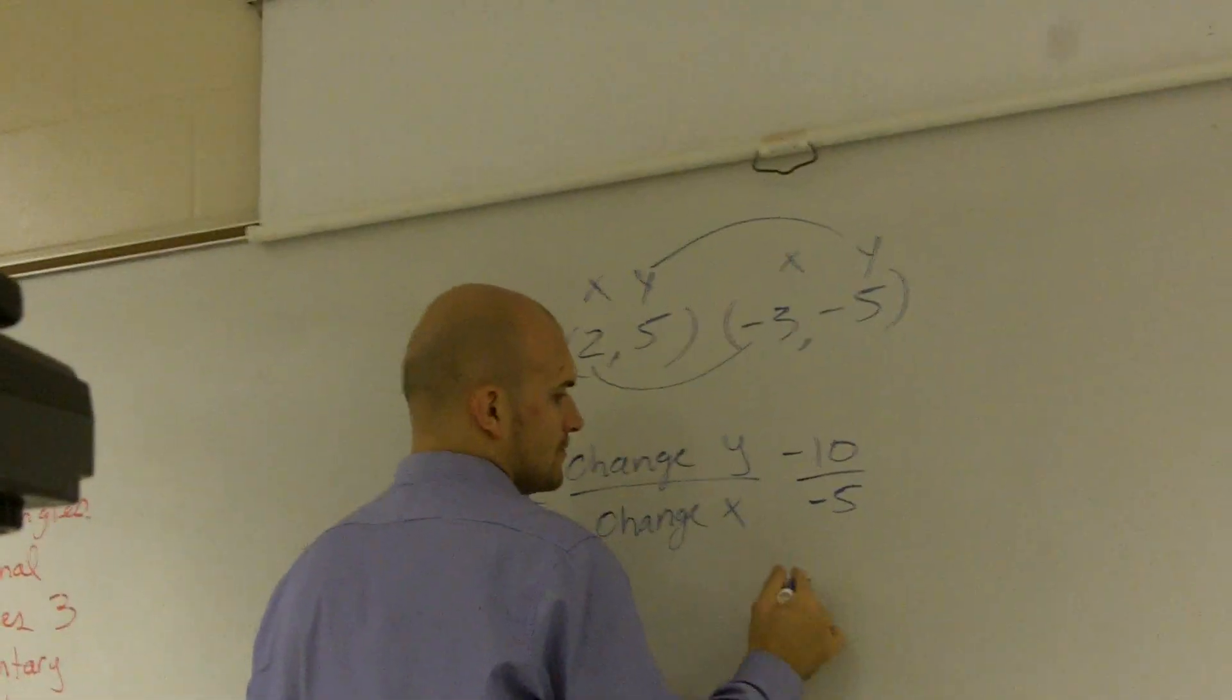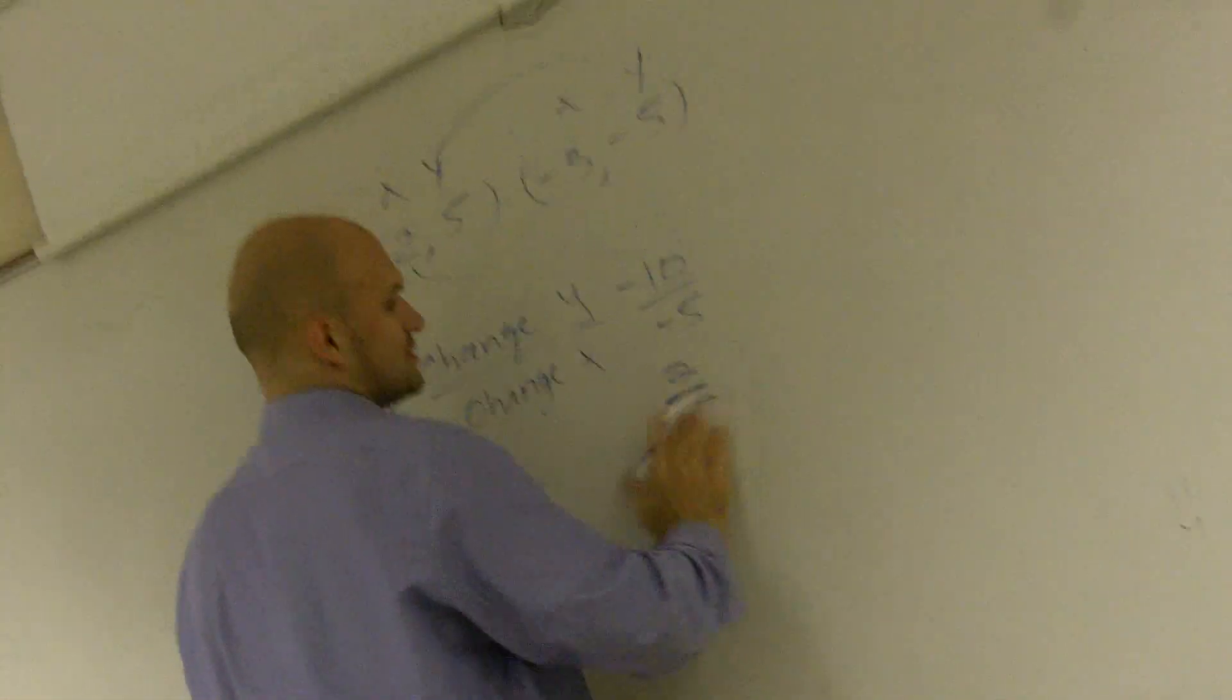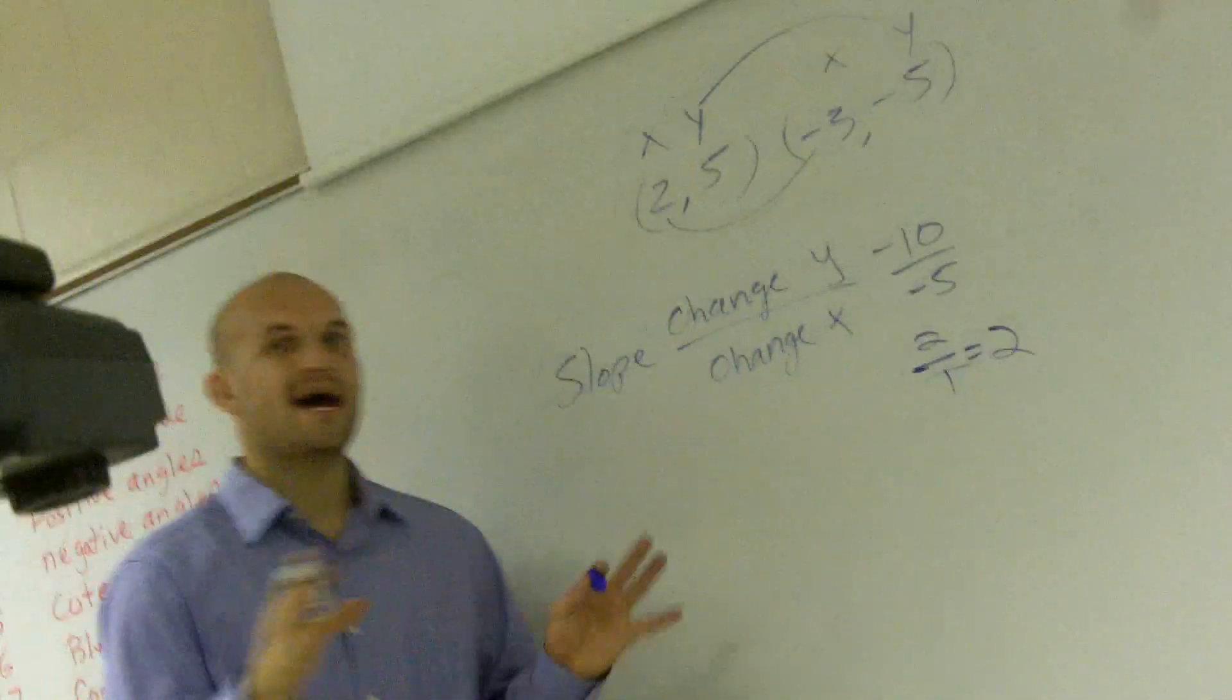So negative 10 divided by negative 5 would be a positive 2, right? Positive 2 over 1, which is equal to 2.